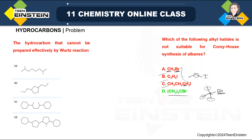The next question is related to Wurtz reaction, another reaction by which you can prepare alkanes. Here you can see some alkenes, though some ring structures are also present. There is a small mistake in the diagram — it should be corrected. We have seen in Wurtz reaction that we always prepare symmetrical alkanes.